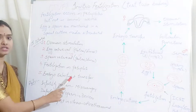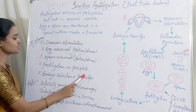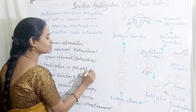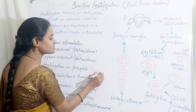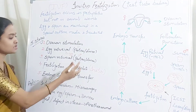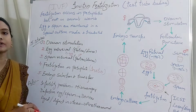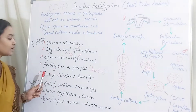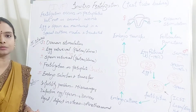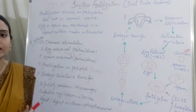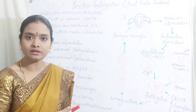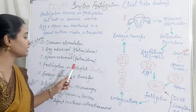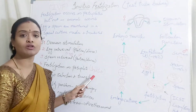Then you have embryo selection and transfer. Now fertilization has occurred in the petri plate — that is in the lab — this is called in vitro. It is not occurring inside the body; it is occurring in the lab, that is called in vitro fertilization. Once in vitro fertilization is done the embryos are selected. You have to evaluate whether the embryo is dividing properly and whether the embryo is healthy.